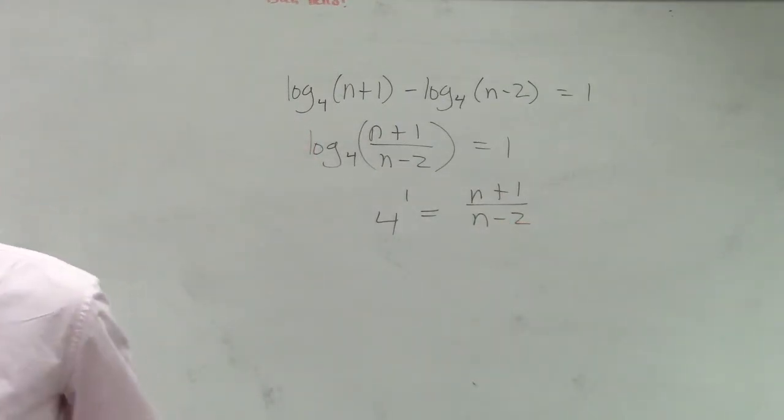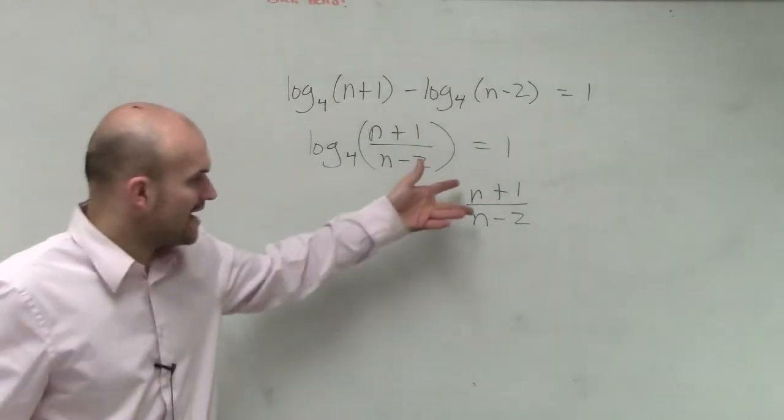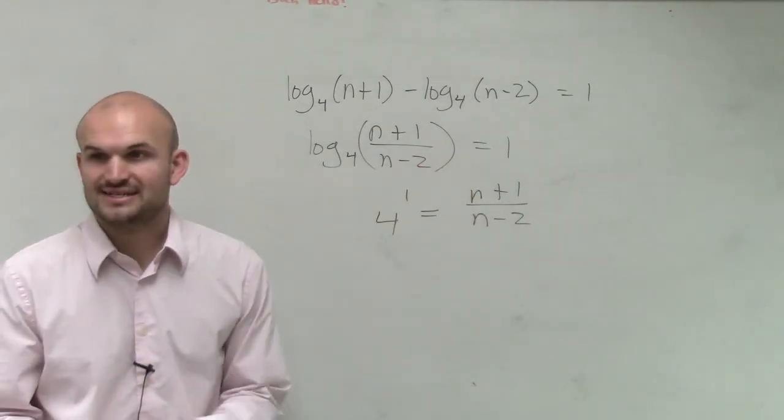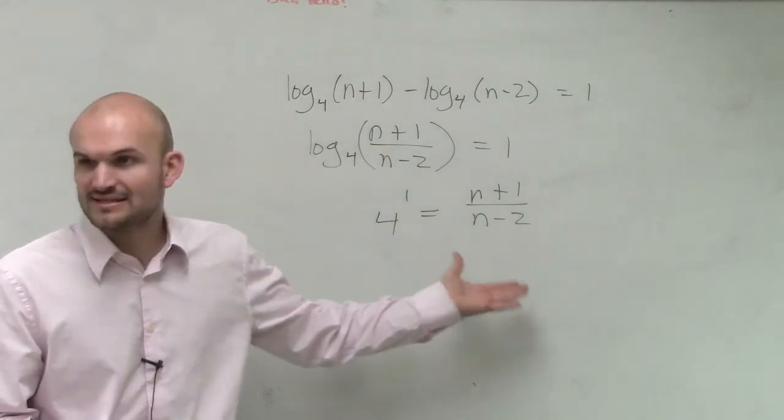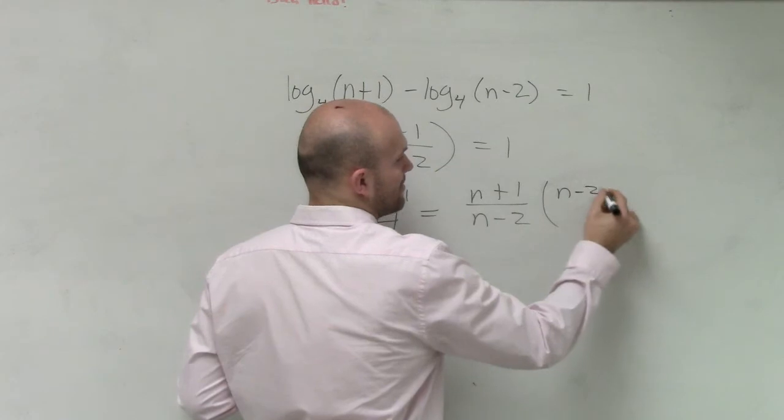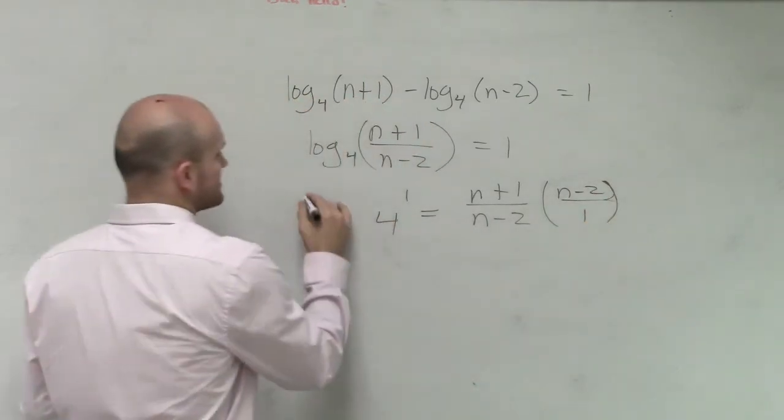Now we need to solve for n, right? So over here, I have n in the numerator and then in the denominator. So first thing I need to do is get the n minus 2 off that denominator.